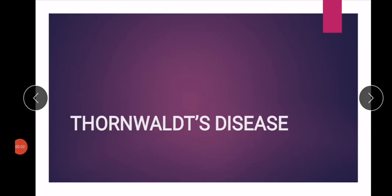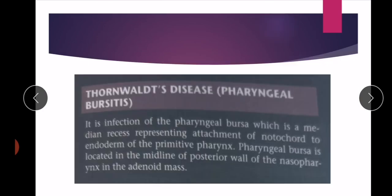Welcome to Doctors World. In this video we will discuss Thornwald's disease or pharyngeal bursitis. Thornwald's disease is the infection of the pharyngeal bursa. The pharyngeal bursa is a median structure that represents the attachment of the notochord to the endoderm of the primitive pharynx. It is located in the midline of the posterior wall of the nasopharynx in the adenoid mass.